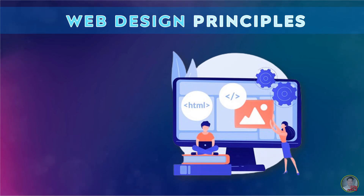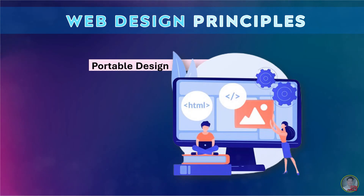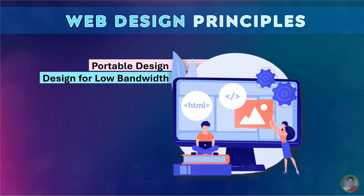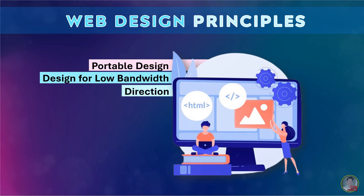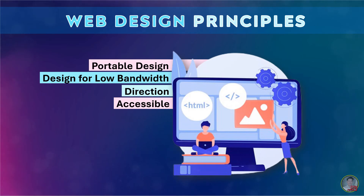Here are the web design principles when creating a website. Number one is portable design — it must be portable and accessible by users who have different browsers, operating systems, and computer platforms. Number two is design for low bandwidth — it must be accessible at a variety of speeds; avoid large graphics or animations as users may leave the site if downloading is very slow. Number three is direction — it identifies the order of importance of the various elements and places them in a sequence where the eye moves and perceives the things it sees. Number four is accessible — visitors must be able to easily access the information, and text must be legible or readable; colors must be creative in visual harmony and balance. Number five is white spaces — used deliberately in your design as breathing space, and may also be used to show the division of contents.